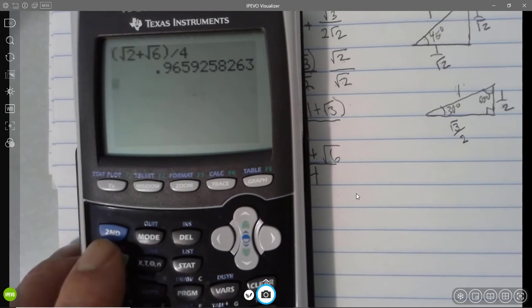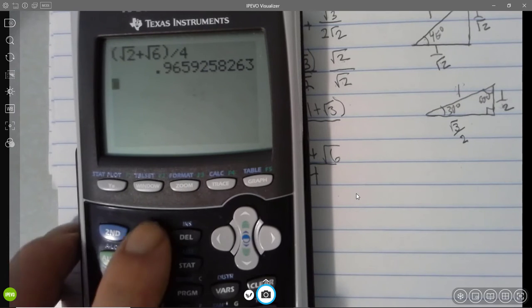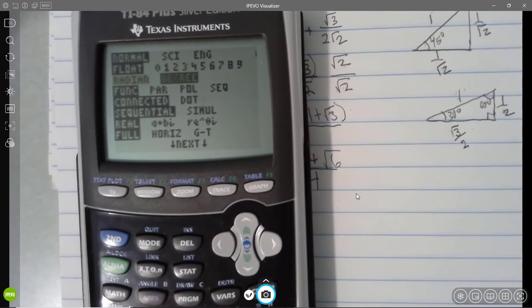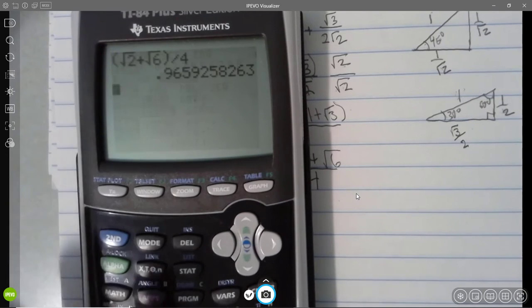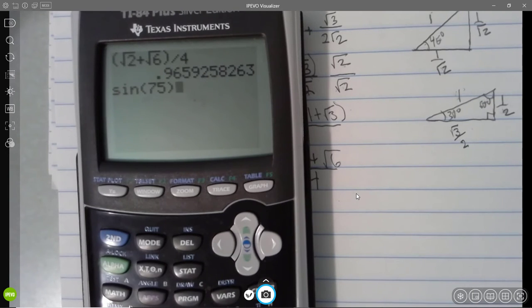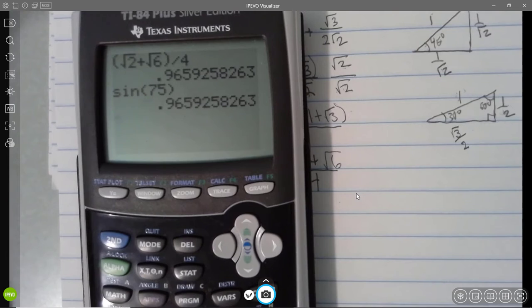Let's have a look at the sine of 75 degrees. Now we want to make sure we're in the right mode. So let's, and we were not, good thing I checked, switch over to degrees. And then we'll take the sine of 75 degrees. And those match, actually all of the decimals showing match. So that confirms it.